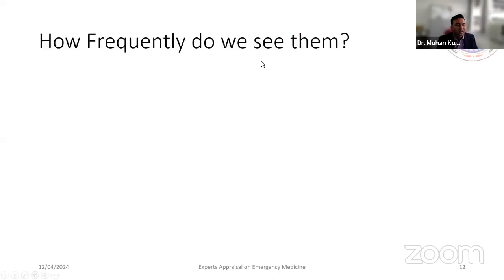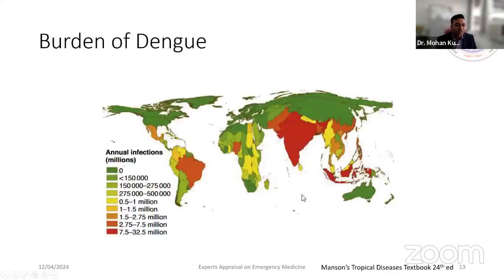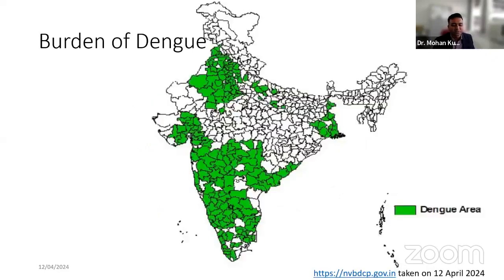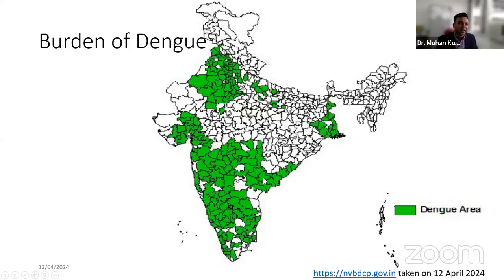Looking at the world map from Manson's tropical textbook, the annual infection rate of dengue is highest in Southeast Asia — India, Indonesia, Malaysia, Bangladesh, Pakistan. Within India, states like Rajasthan, Gujarat, Maharashtra, Telangana, Karnataka, Kerala, and Tamil Nadu have pockets of dengue till date, as shown on the National Vector Disease Control Programme map.